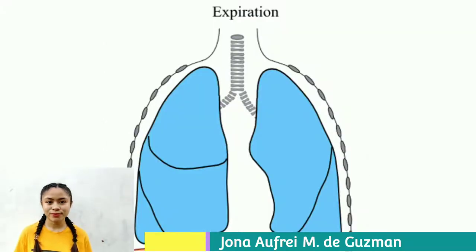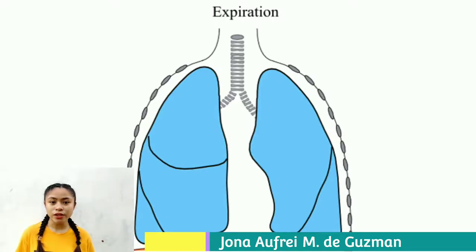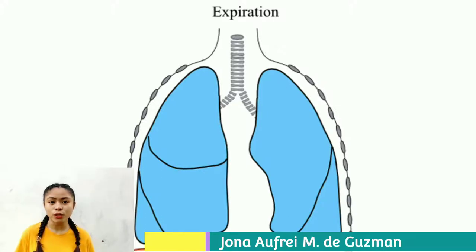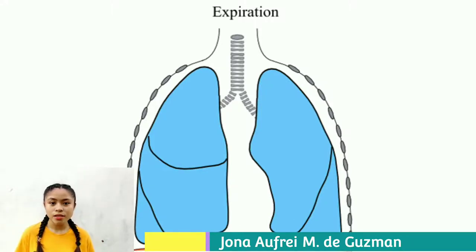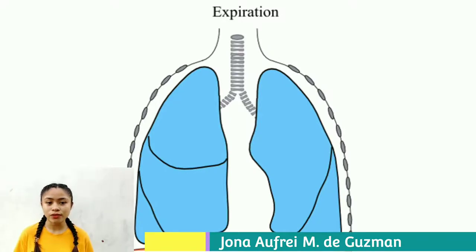The events of inspiration and expiration can be summarized as follows. During inspiration, pleural pressure decreases due to increased thoracic volume and increased lung recoil; as pleural pressure decreases, alveolar pressure decreases and air flows into the lungs. During expiration, pleural pressure increases due to decreased thoracic volume and decreased lung recoil; as pleural pressure increases, alveolar pressure increases and air flows out of the lungs.